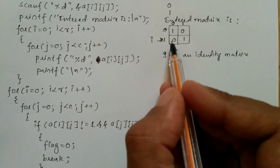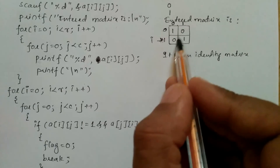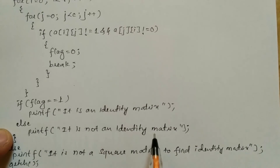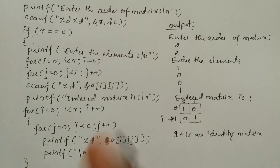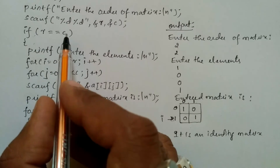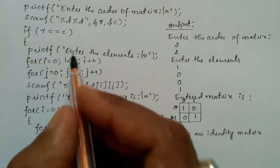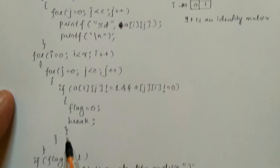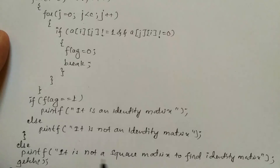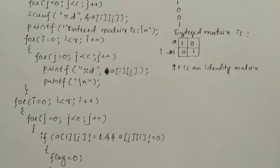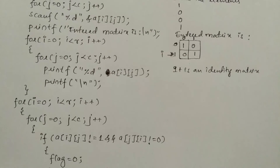If we have any other number other than zeros in those positions, then obviously we are going to execute the else part: it is not an identity matrix. One more run you can perform by entering different number of rows and different number of columns. In that situation, if this condition fails, then all these statements will not get executed and the else part will be executed, printing: it is not a square matrix to find identity matrix. Now let us execute this program and check out the various outputs. I will take you to my laptop screen.